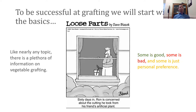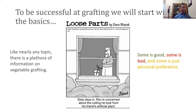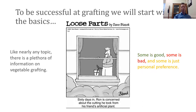I know you guys are all master gardeners, and so hopefully none of you have ever found yourself in a situation like this goofy little cartoon here — 60 days in, Ron is concerned about the cutting he took from his friend's artificial plants. The reason I include that is if you go into vegetable grafting more or less blind with no information, it may feel like trying to root an artificial plant. It's not the easiest thing to do, so it's important that you have some basic information going into that.